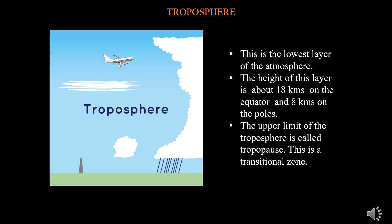The environmental temperature decreases with increasing height in the troposphere. It decreases at the rate of 1 degree C for every 165 meters of height. This is called the normal lapse rate. The upper limit of the troposphere is called the tropopause, which is a transitional zone where characteristics of both the troposphere and stratosphere are found.